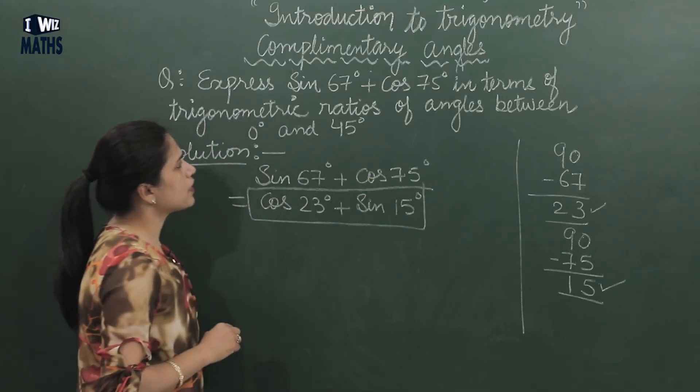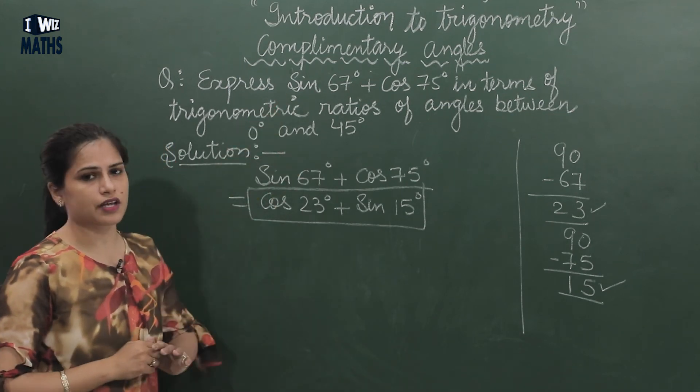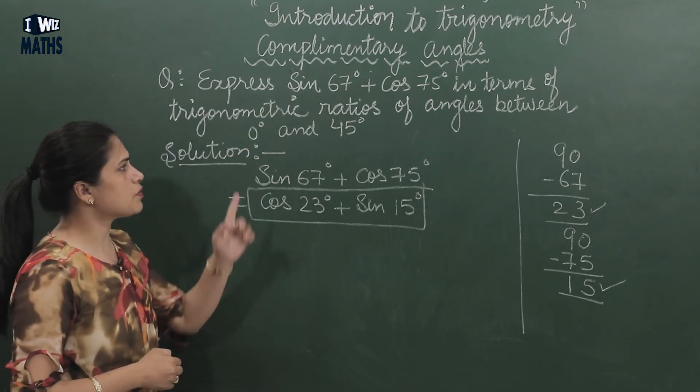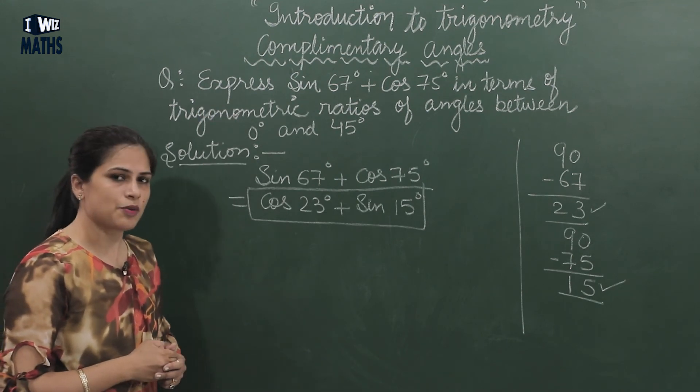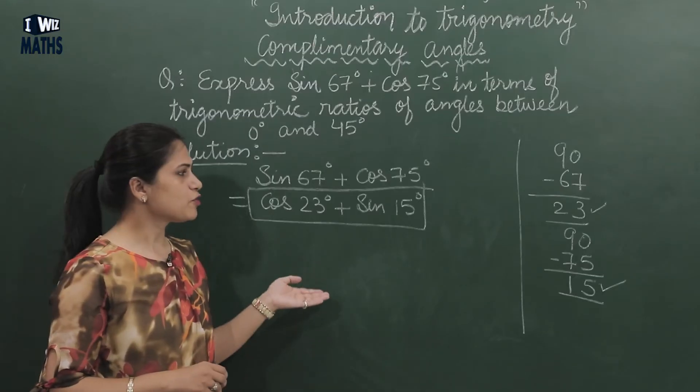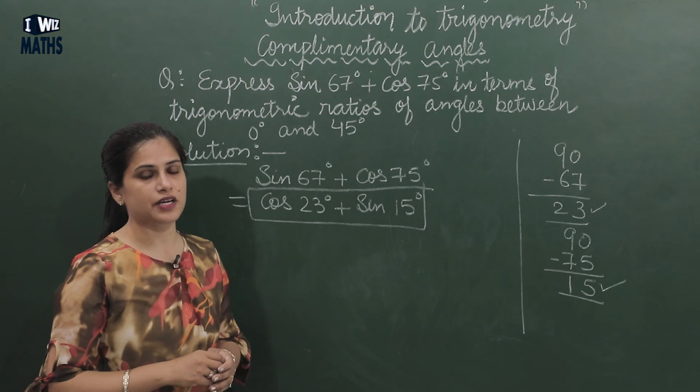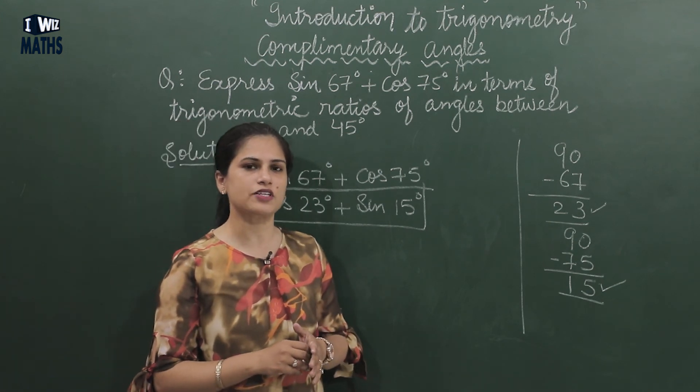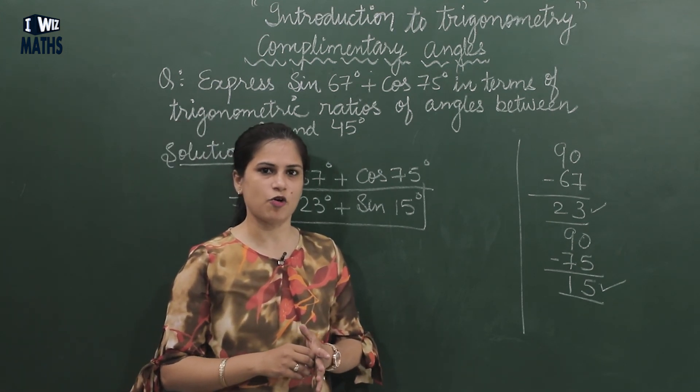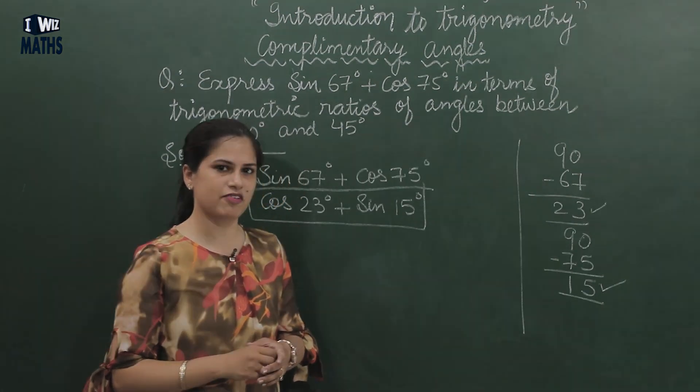Here we converted the question to the 0 to 45 range, and this was only possible because we knew the concept of complementary angles. So these were some questions on complementary angles. After this, we'll cover trigonometry identities. For that, you'll have to wait for my next video. Till then, keep revising.